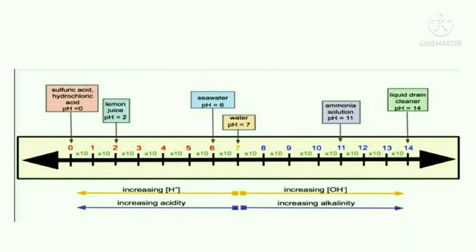Now we'll see pH scale. This is diagram of pH scale. Our pH scale starts from 0 and ends up to 14. In between, 7 is the neutral point. If any solution has a pH 7, it is called neutral.